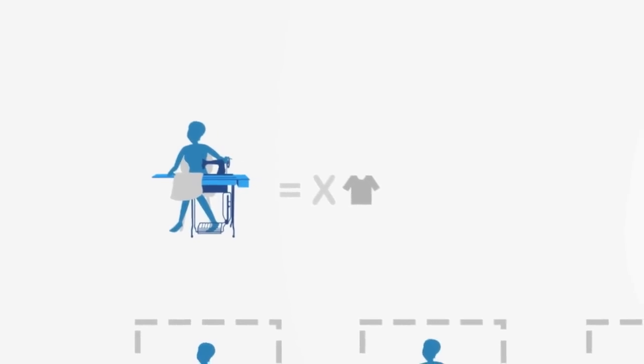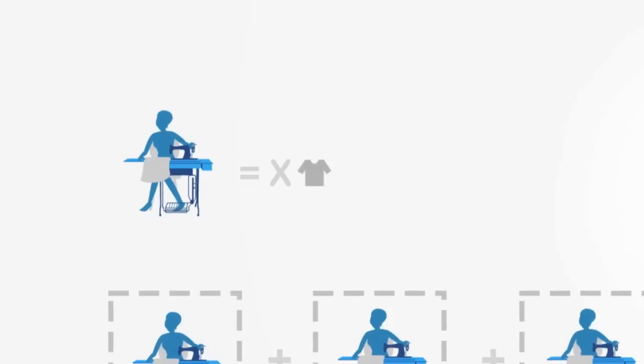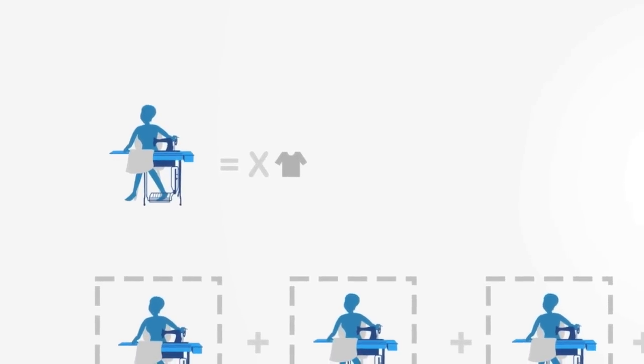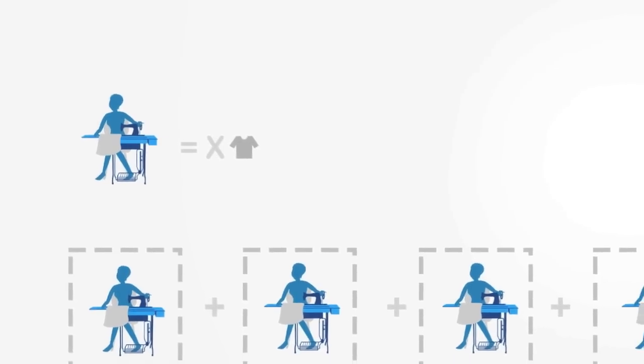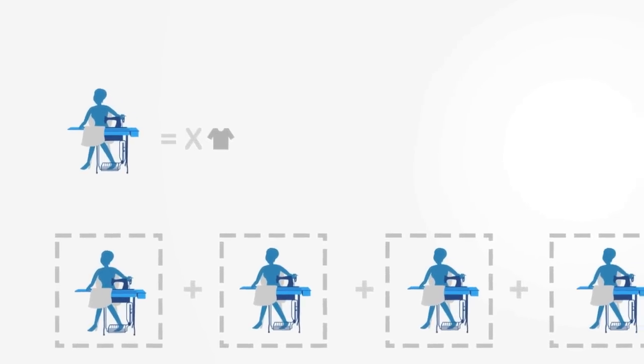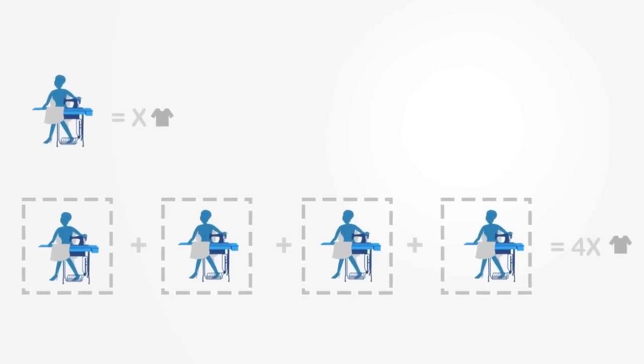To illustrate this further, let's take an example of four workers producing clothing. In isolation, each seamstress can sew a given amount of clothes within a day. Now if we put them together, we might get one of three results. Firstly, they might not interact with each other very much, meaning the whole would simply be the sum of its individual parts.